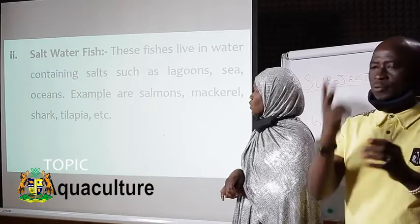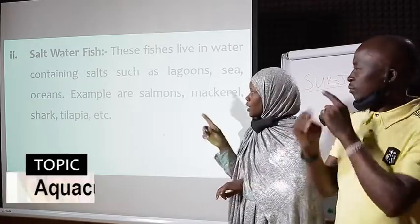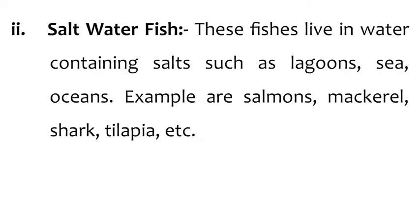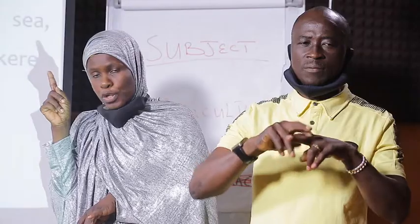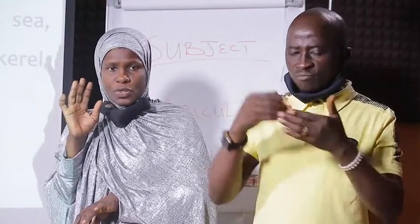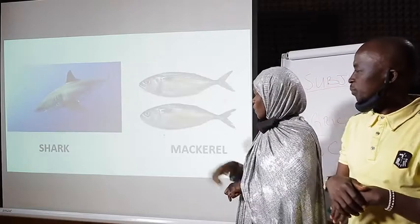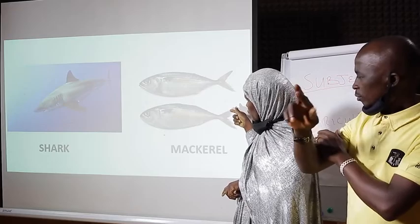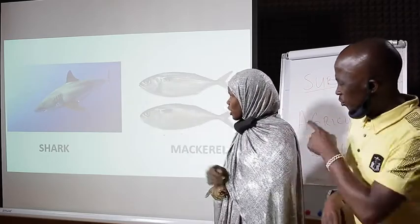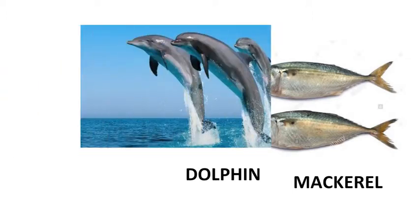The second classification under habitat is saltwater fish. These fishes live in water containing salt. The previous group was freshwater — no salt. Saltwater bodies include lagoons, sea, and oceans. Examples of fish that live in saltwater include salmon, mackerel, shark, and tilapia. As shown in the diagram, mackerel, shark, and dolphin fish are all saltwater fish.